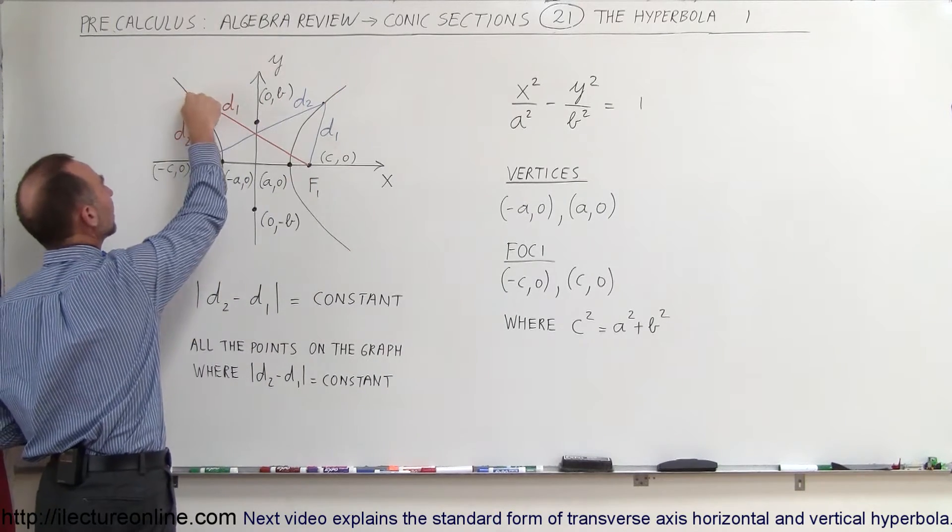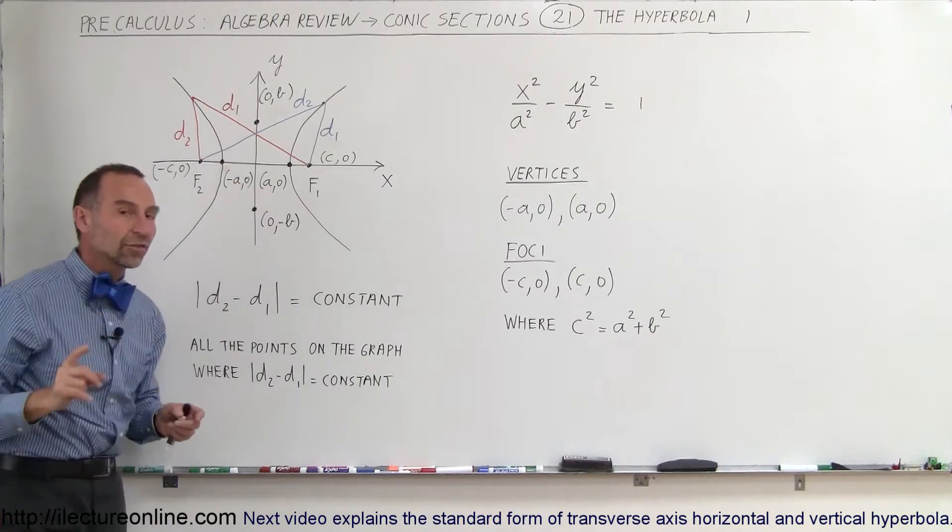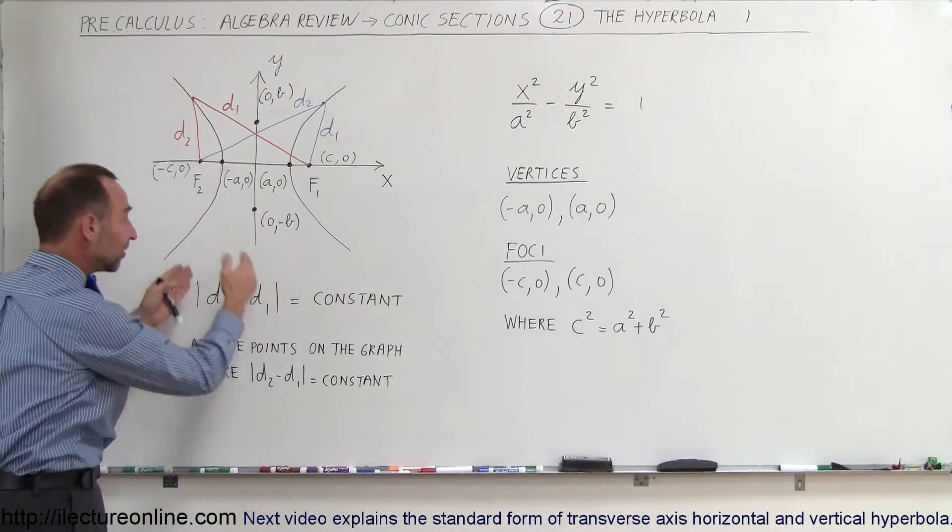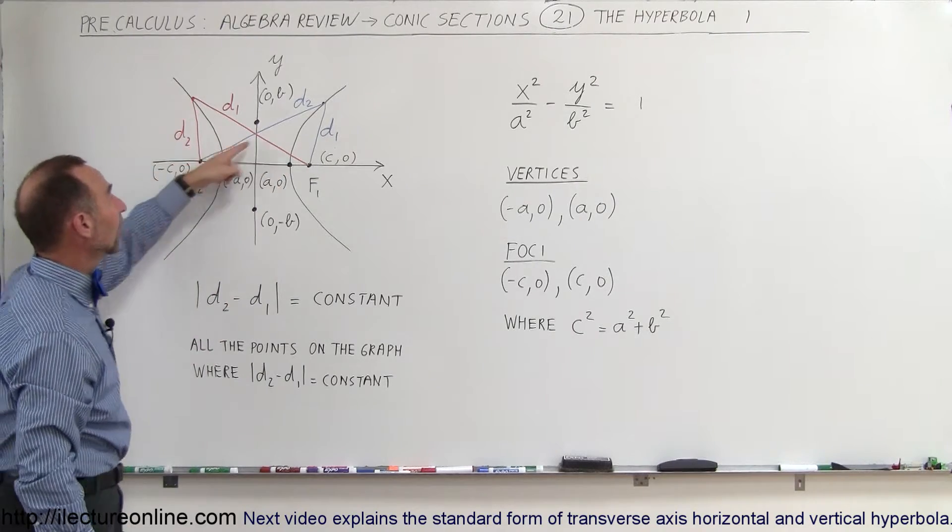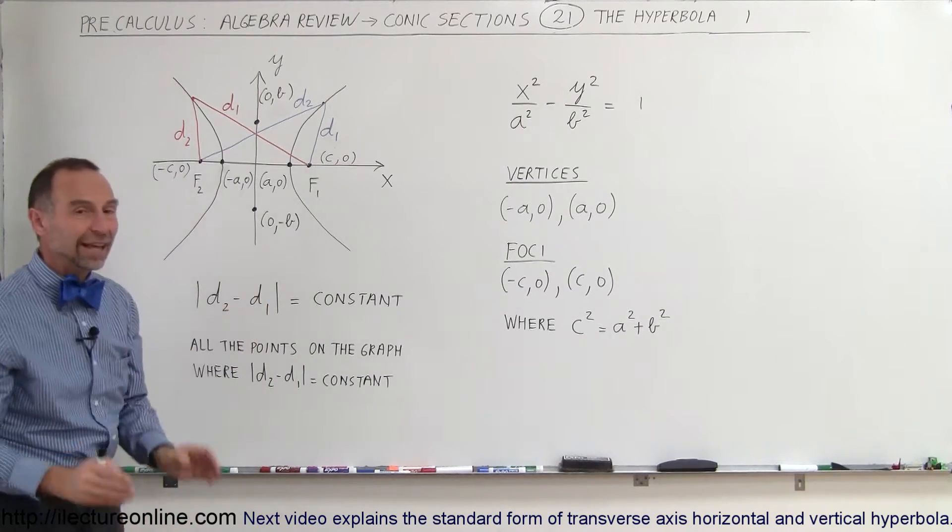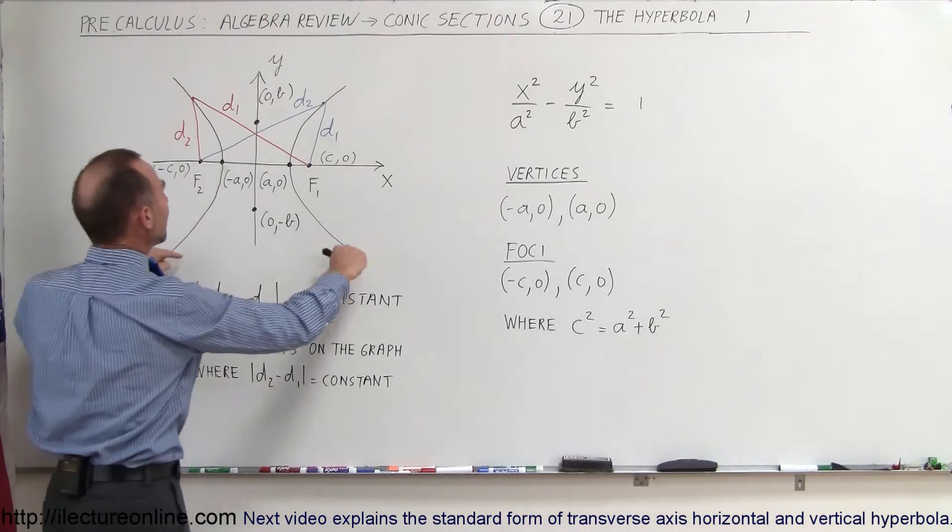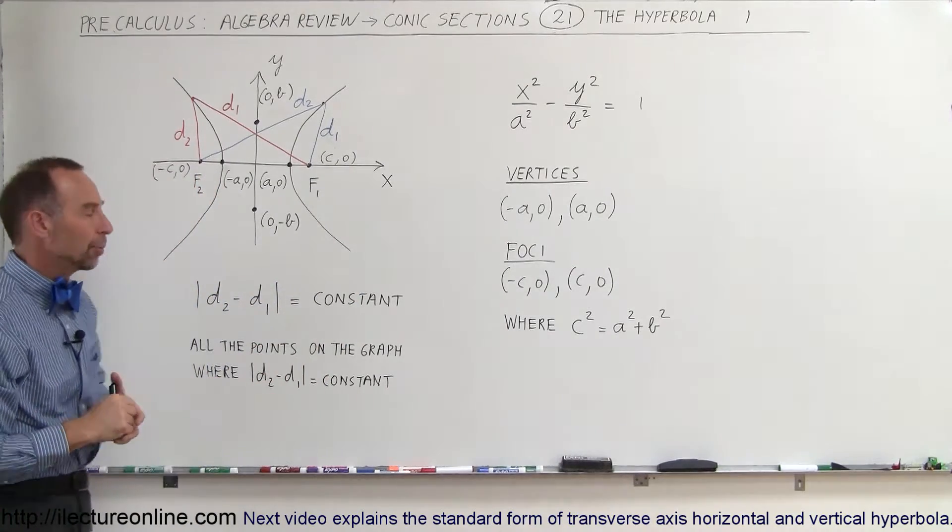So we can pick any other point over here and again d2 minus d1 must equal a constant. Now notice I did put absolute value signs around it because in this case that's going to be a negative value. On that side it's going to be a positive value. But if we take the absolute value of the difference, that will always be a constant for any point on the graph.